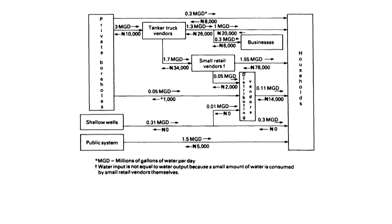To wrap up, let's look at the money flow diagram for Onitsha again. Almost all of the money flows for water in Onitsha were in the informal water vending market. The public water utility was not really a serious player from a financial perspective. During the dry season, the private water vending system collected about 24 times as much revenue as the public utility.